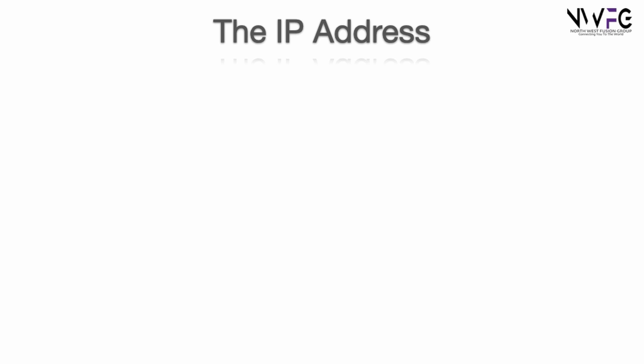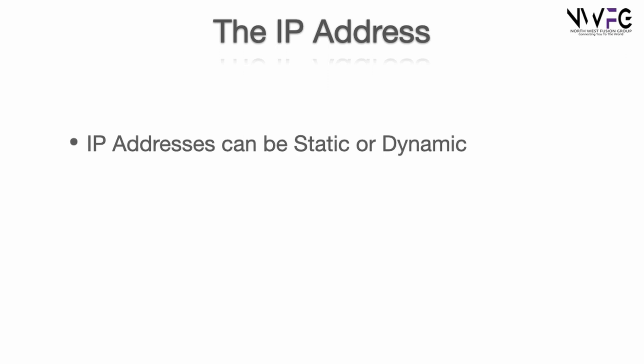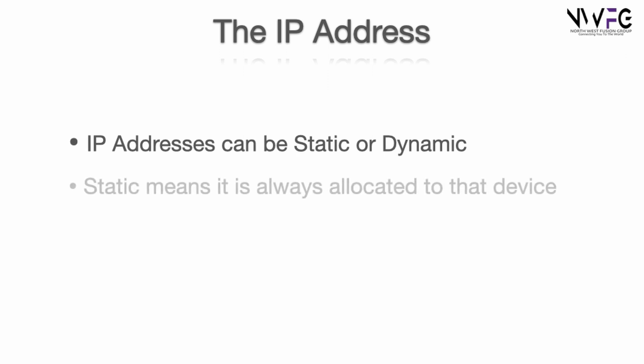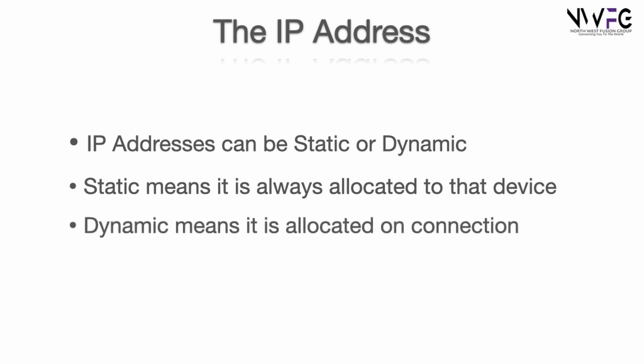IP addresses can be allocated in two different ways: static and dynamic. Static means that the IP address is always allocated to that device and never changes — just like your telephone number, since no one would know how to contact you if your number kept changing. Dynamic means that your address is allocated to you when you connect. Think of it as plugging your telephone in and getting a number allocated at that point — while you may get allocated the same number, you may not. This is the way most people get their IP address from their internet service provider. If all you're doing is making outgoing calls, your number is not that important.